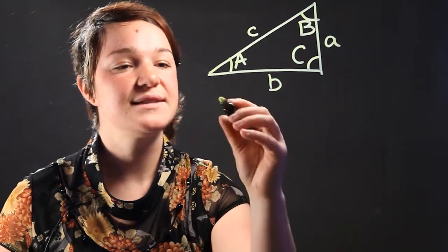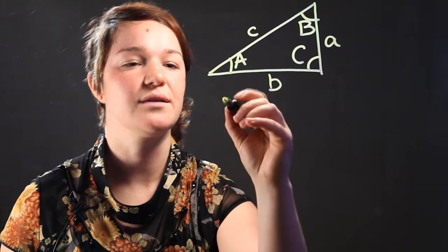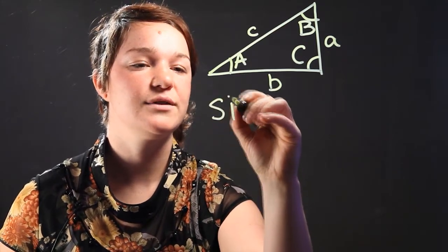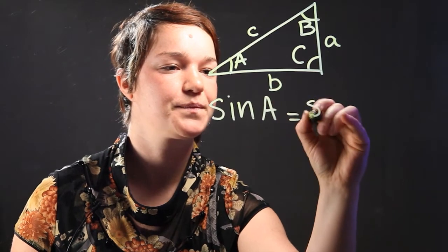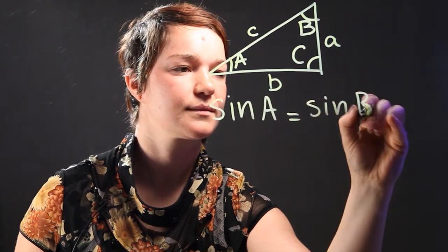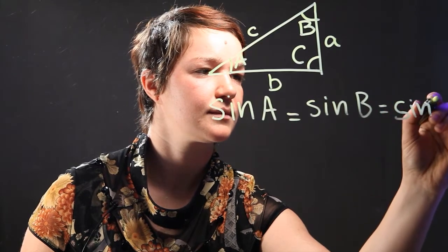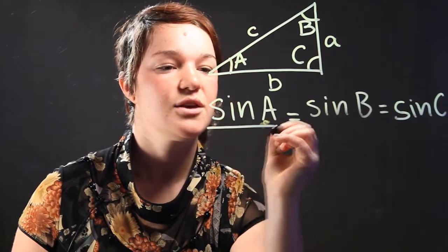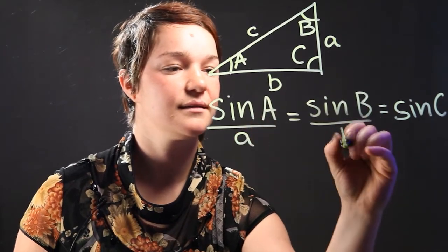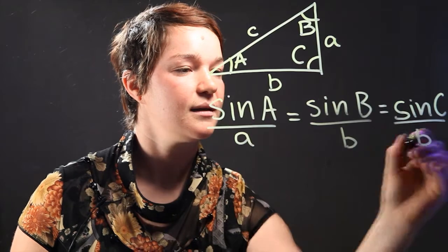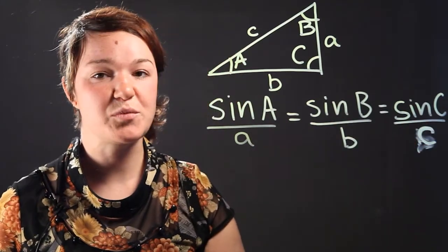So, this Law of Sines says that the angles and the sides are proportional in a triangle. Or basically, if you take the sine of the angles, you just have to divide it by the length of the side. Oh, that's a C right there. And you have a proportion.